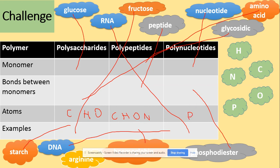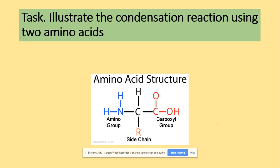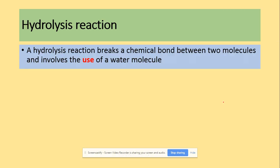A condensation reaction joins two molecules together with the formation of a chemical bond and involves the elimination of a water molecule. Looking at the structure of a single amino acid, we have an amino group and a carboxyl group. In the condensation reaction, water is removed to make a peptide bond, which forms between a carbon from the carboxyl group of the first amino acid and a nitrogen from the amino group of the second amino acid.